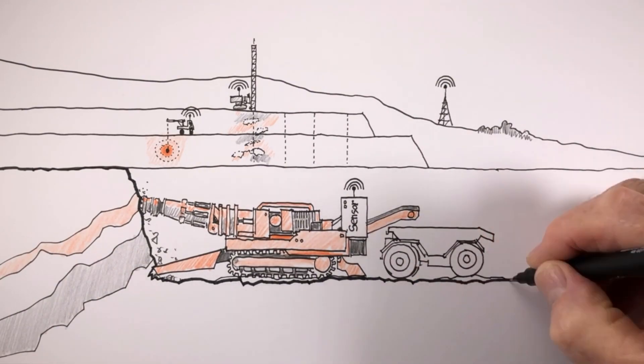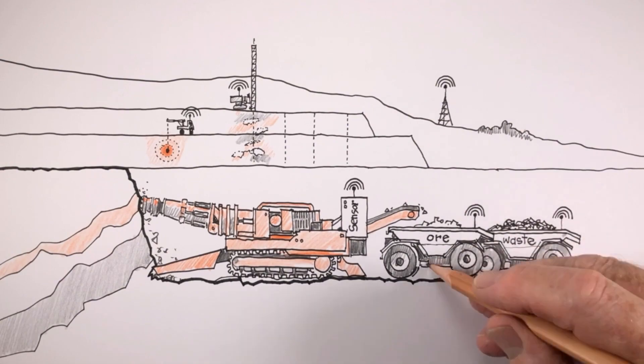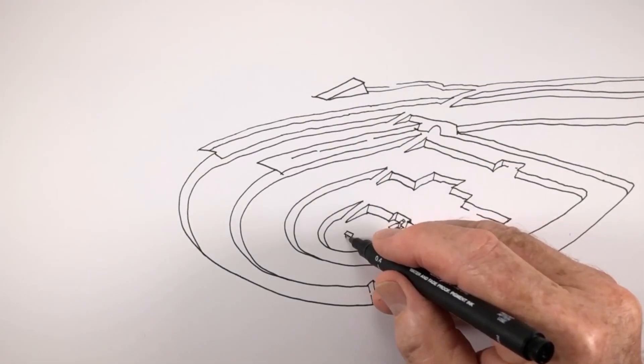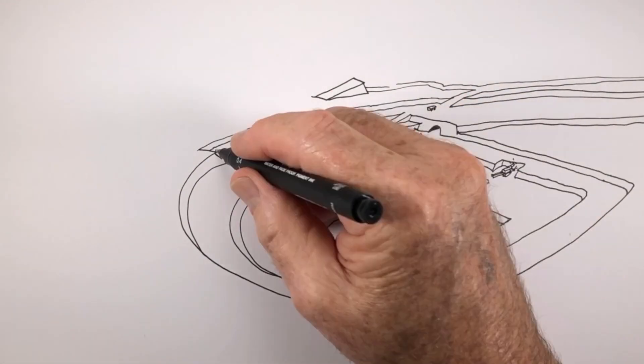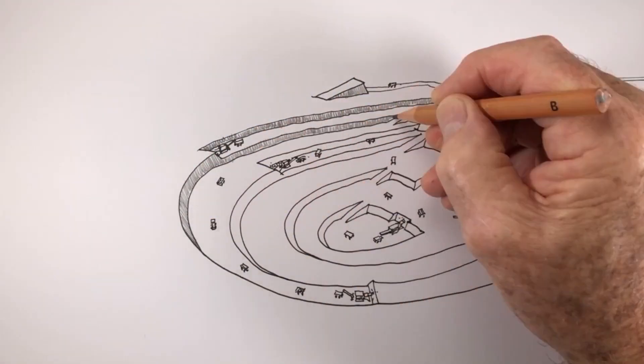And smaller, electric trucks that allow even further separation of waste and ore within the pit. Operating as a swarm, these trucks efficiently undertake precise movement of material, delivering more ore and less waste to the process plant.